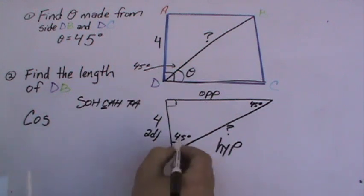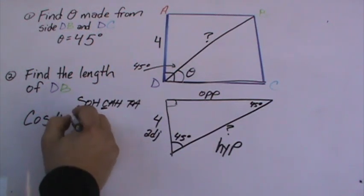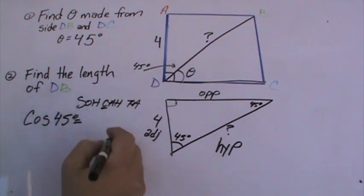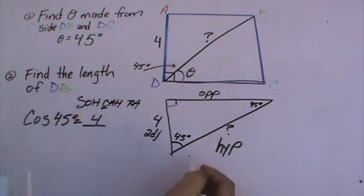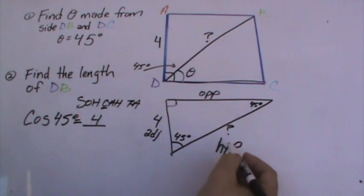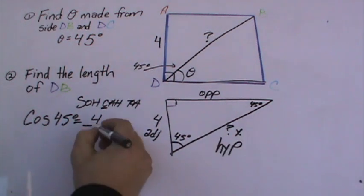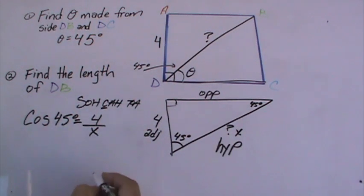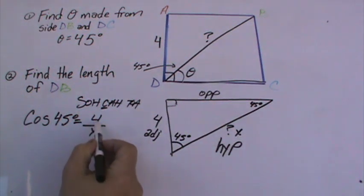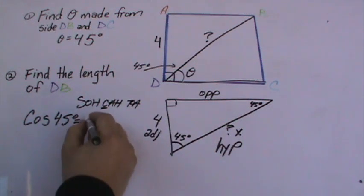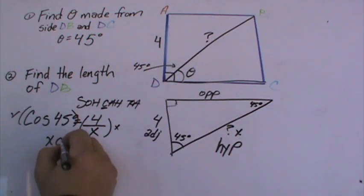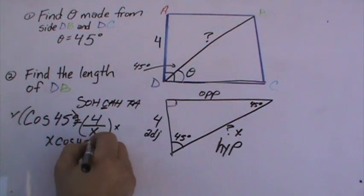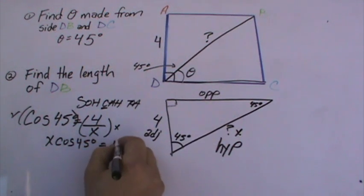So cosine of 45 degrees is going to be adjacent, which is 4, over your hypotenuse, which is what we're looking for, so we'll make that x. We want to get x by itself. The first thing we're going to do is multiply both sides by x. We get x cosine 45 degrees equals 4.